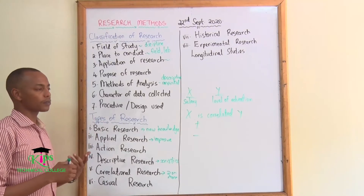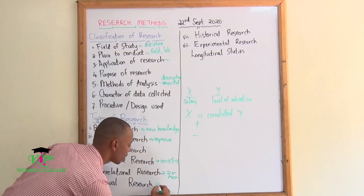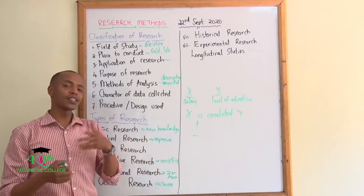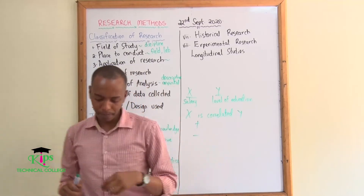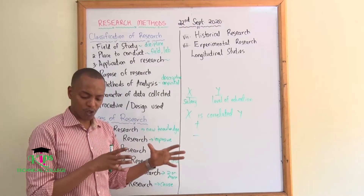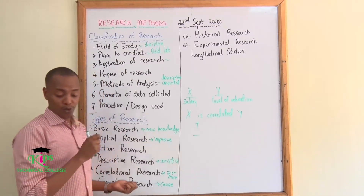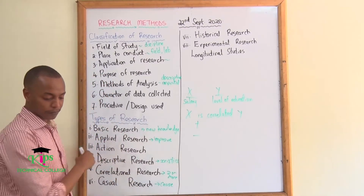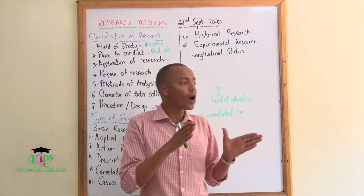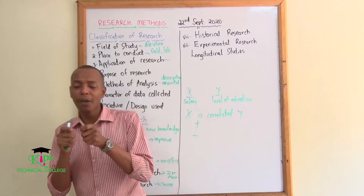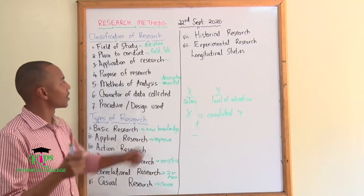Then you have causal research. Causal research is where you want to know what caused something to happen — what caused a certain phenomenon to occur. This is usually more effective where the researcher has already found a niche or a problem that existed in whatever papers had already been written.